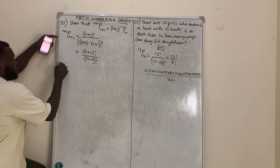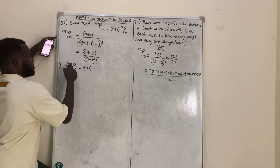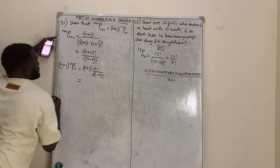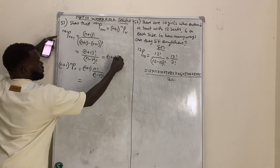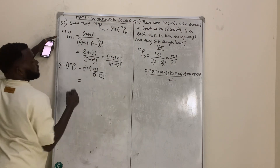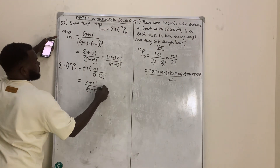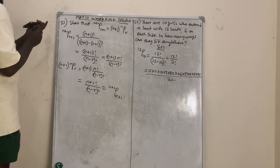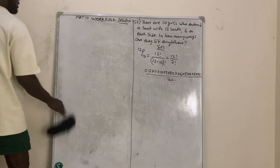Now let's evaluate the right side: (n+1) times n permutation r equals (n+1) times n factorial over (n minus r) factorial. This equals (n+1) factorial over (n minus r) factorial, which is the same as (n+1) permutation (r+1). So they are equal. You can watch my video on permutation and combination to understand it better.